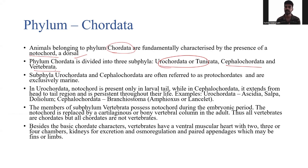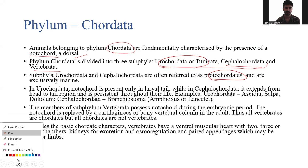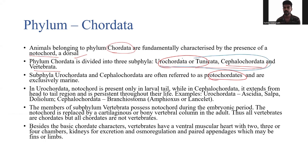Most vertebrates — where a vertebral column is present — come under phylum Chordata. Urochordata and Cephalochordata together are normally referred to as Protochordates. They are exclusively marine animals.